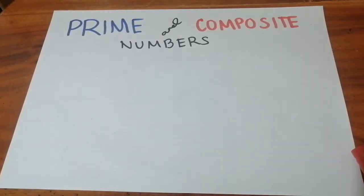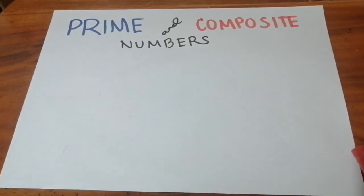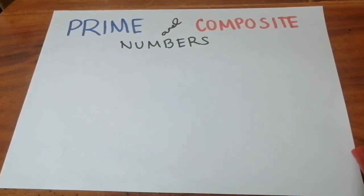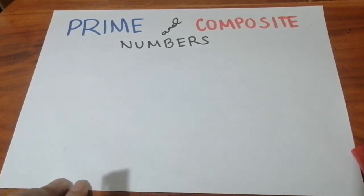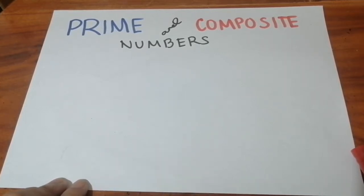Hello everyone, welcome back to my channel. Today I will be discussing the difference between prime and composite numbers. In my previous lessons, I discussed divisibility rules. Today I will be discussing prime and composite numbers because you should know how to identify if a number is prime or composite, as we will be using that when we do prime factorization.